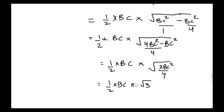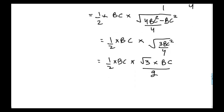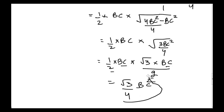Taking the square root: square root of 3 remains as is, square root of BC squared gives BC, and square root of 4 gives 2. So we have 1/2 times BC times (√3 × BC / 2). Multiplying BC by BC gives BC squared, and 2 times 2 gives 4 in the denominator. Therefore, the area equals square root of 3 divided by 4 times BC squared, which is also equal to square root of 3 divided by 4 times side squared, since BC is one of the sides.